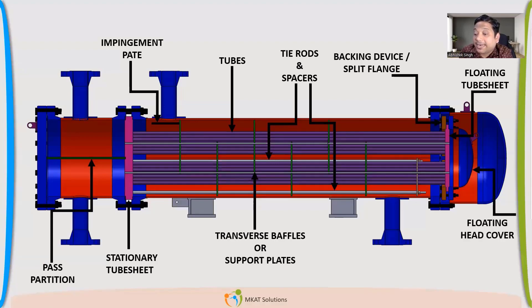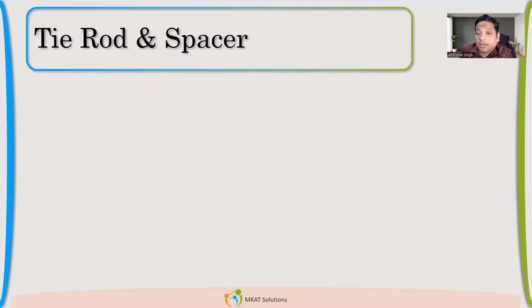So here it's floating head cover. You see here this one. And then this is floating head cover flange. So backing device or backing flange. Then floating head cover flange and floating head cover. These are the three parts which are here. The floating head side.